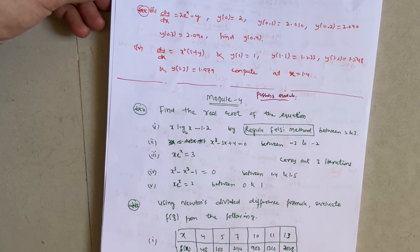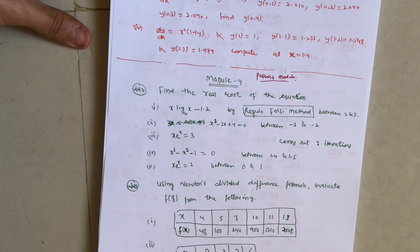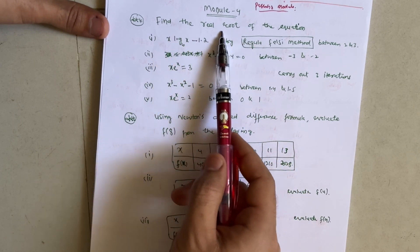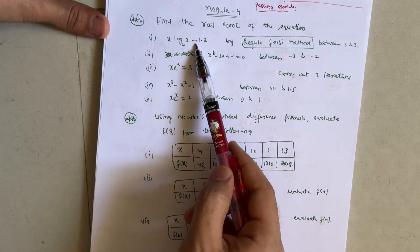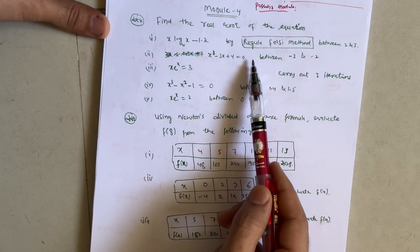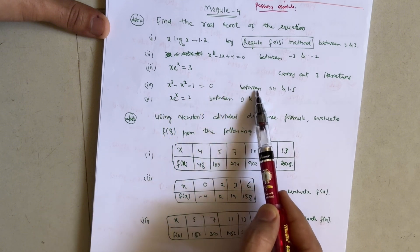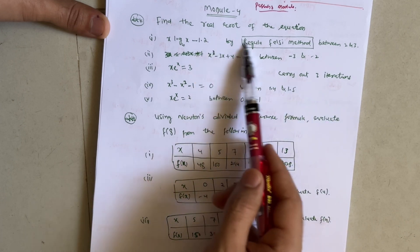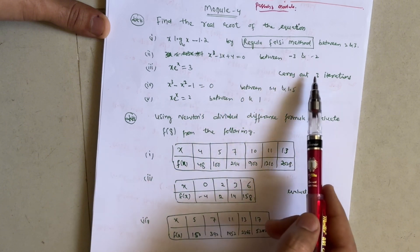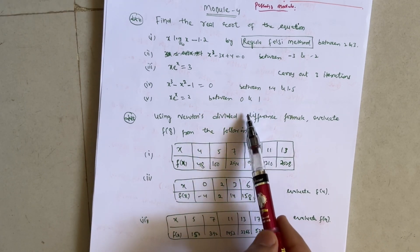Make sure you go through these three important methods — Taylor series, Runge-Kutta, and Milne's method. If you have time, I suggest also going through Modified Euler's method, which will definitely allow you to score 20 marks from Module 5. Next, the passing module is Module 4 — go through the Regula Falsi method. Problems include: find the real root of x·log(x) = 1.2 between 2 and 3; x³ − 3x + 4 = 0 between −3 and −2; x·eˣ = 3; and x³ − x² − 1 = 0 between 1.4 and 1.5. Carry three iterations for each, and also x·eˣ between 0 and 1 using Regula Falsi.